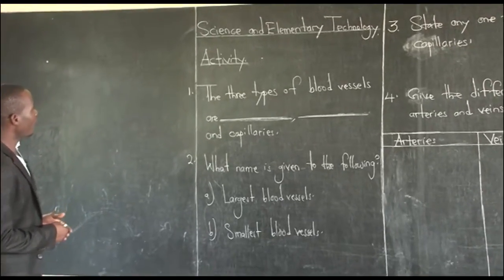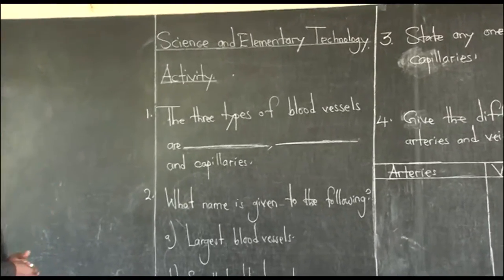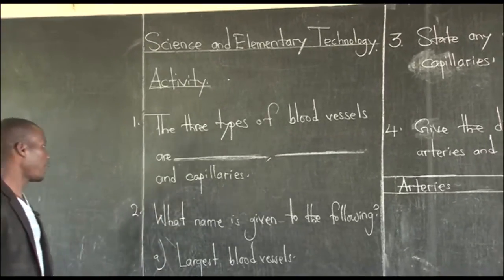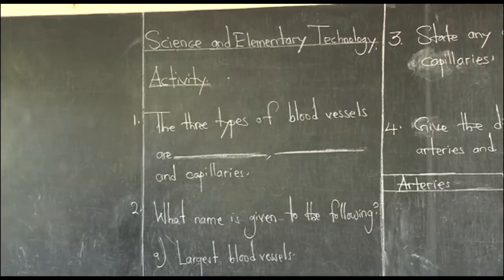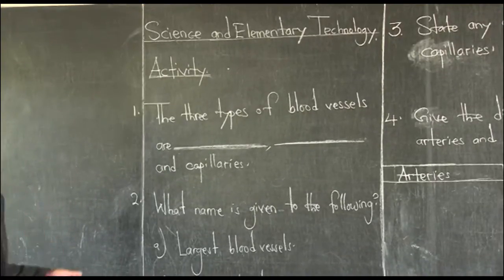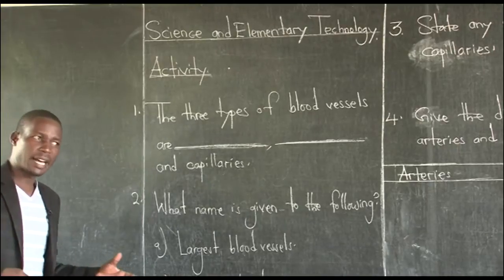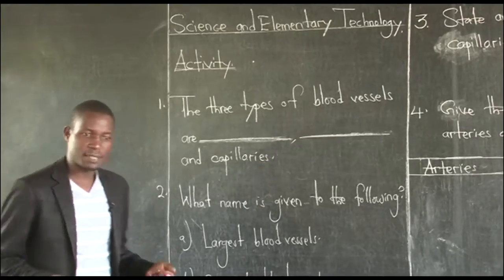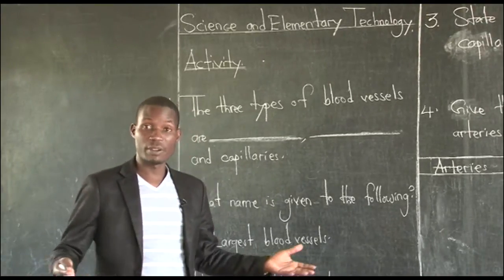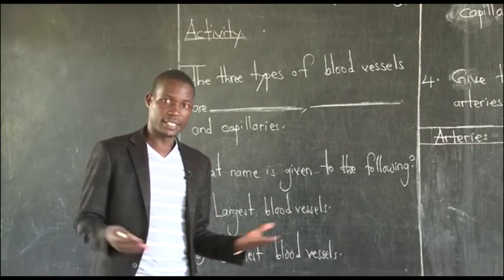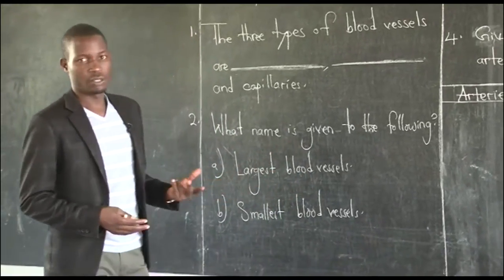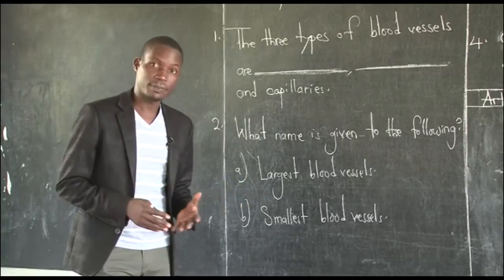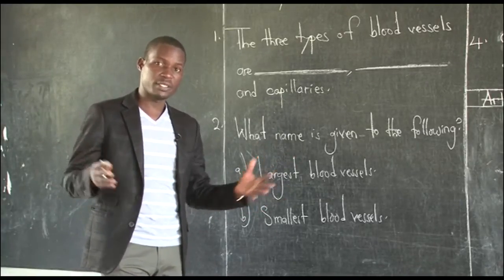Number one says: the three types of blood vessels are dash, dash, and capillaries. So we have been given one of them, but we need to understand first, what are blood vessels? Simply, as we discussed last time, blood vessels are tubes that carry blood around the body. We looked at capillaries, arteries, and veins as blood vessels — majorly three.